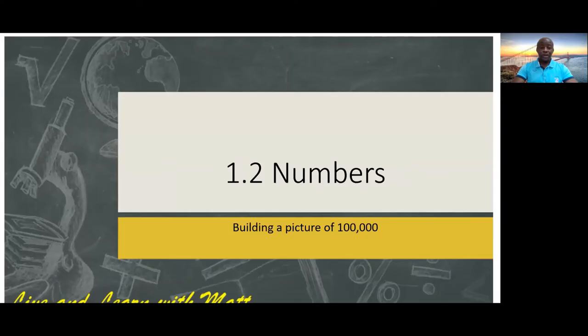Hi guys, and welcome back to Mathematics for Grade Four. Today we're going to use the Student Journal Book A, Unit 1.2, and Practice Book A, Unit 1.2 as well. So bring up your Student Journal Book A, open onto Unit 1.2, page 10: Building a Picture of 100,000.